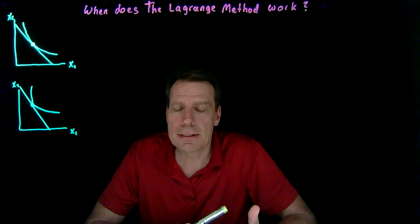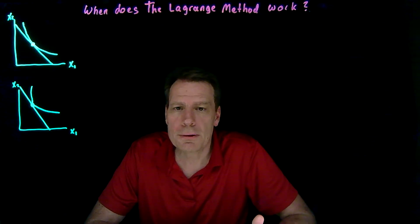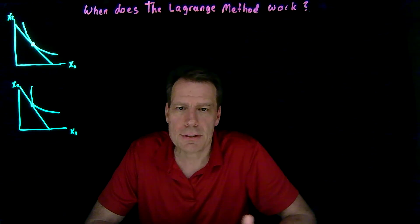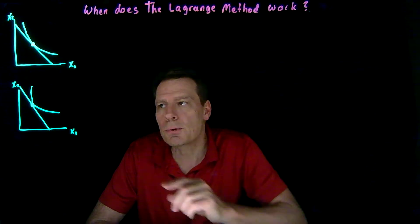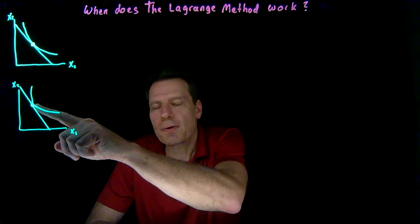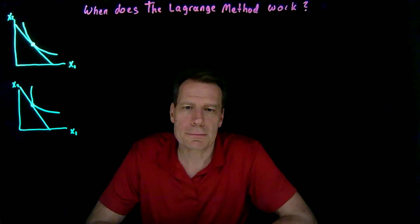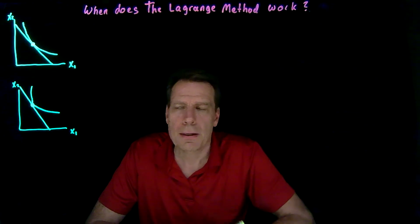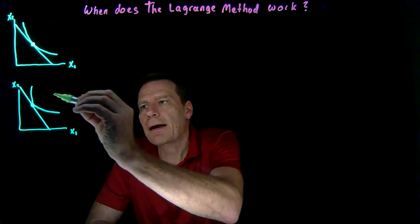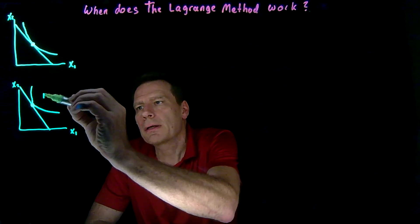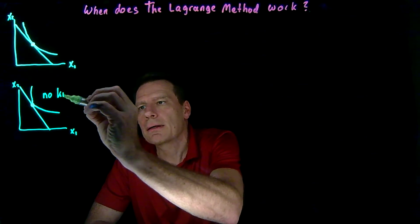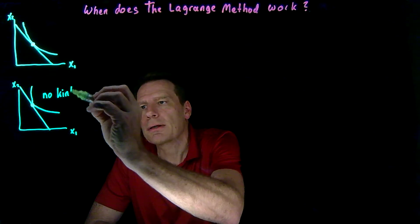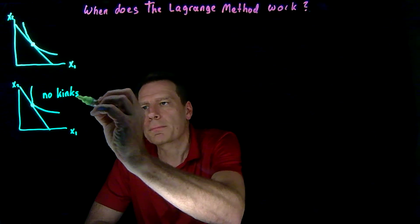Since the Lagrange method looks for tangencies, it would not be able to find such a point. So we're going to have to assume that there are no kinks in our indifference curves.